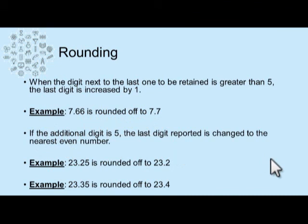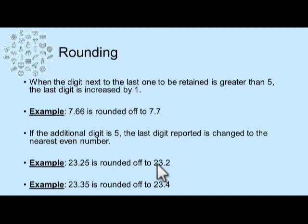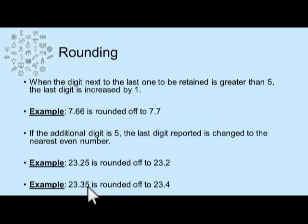Additionally, if the additional digit is five, the last digit reported is changed to the nearest even number. For example, 23.25 — the last digit is five, and the preceding digit, two, is already even, so you simply drop the five and it becomes 23.2. In another example, 23.35 — three is an odd number, so you round the five up to the next even number, giving 23.4.